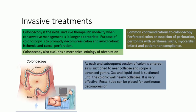To enter the colon, the scope goes section by section: sigmoid, descending, transverse, ascending, then cecum. As each section is entered, air is suctioned out, relieving distension and pain. The colonic pole collapses after suctioning, then the scope advances further gently. Liquid stool is also suctioned. It is a very effective procedure, and a rectal tube can be placed for continuous decompression if there is recurrence.